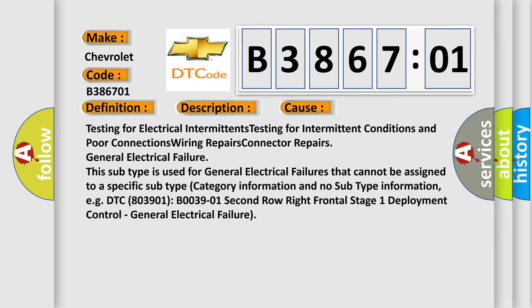For example, DTC B003901, second row right frontal stage 1 deployment control general electrical failure.